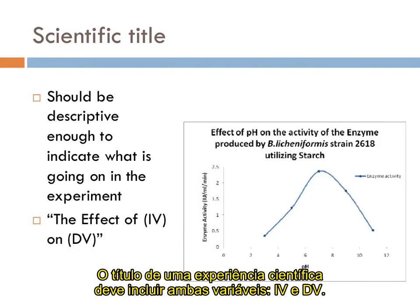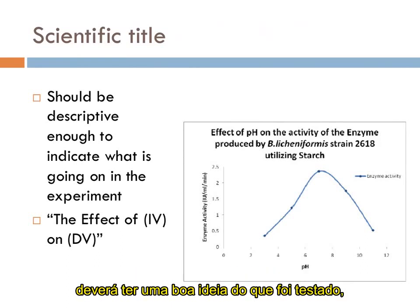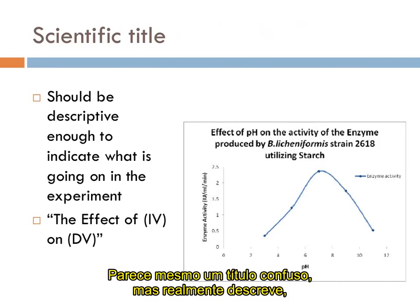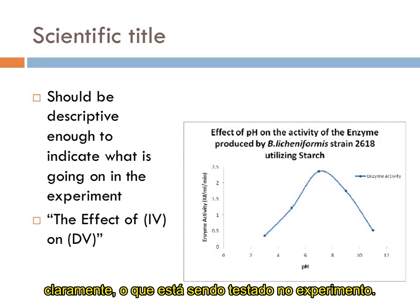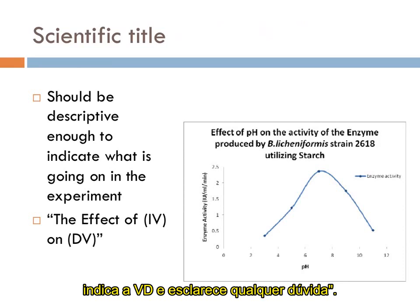The title for a scientific experiment should include both the independent and dependent variables. Someone looking at an experiment or a graph's title should have a really good idea of what was being tested without reading any further. In the graphic to the right, a title such as 'Acids, Bases, Bacteria, Oh My' might sound witty or cute, but it doesn't clearly describe what's being tested. A title like 'The Effect of pH on the Activity of the Enzyme' indicates the independent variable, the dependent variable, and leaves very little to question.